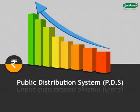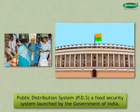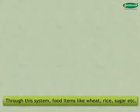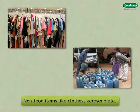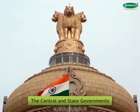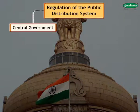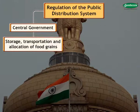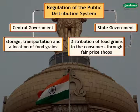Public Distribution System or PDS is a food security system launched by the government of India. Through this system, food items like wheat, rice, sugar etc., as well as non-food items like clothes and kerosene etc., are distributed among poor and needy people. The central and state governments share the responsibility of regulating PDS. The central government is responsible for storage, transportation and allocation of food grains, whereas state governments hold the responsibility for distributing food grains through fair price shops.